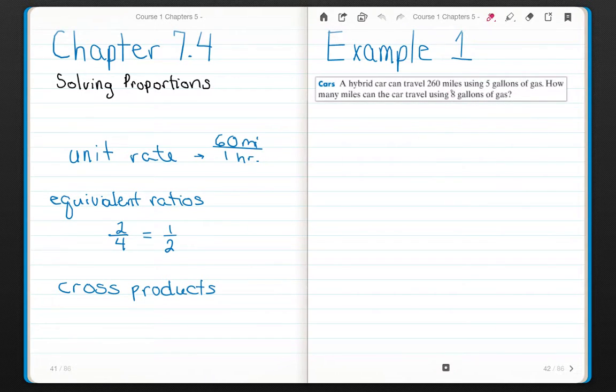A hybrid car can travel 260 miles using five gallons of gas. So 260 miles on five gallons of gas. How many miles can the car travel using eight gallons of gas? So I'm going to set up my proportion. I know the car can go 260 miles on five gallons of gas. I want to know how far can my car go on eight gallons of gas.